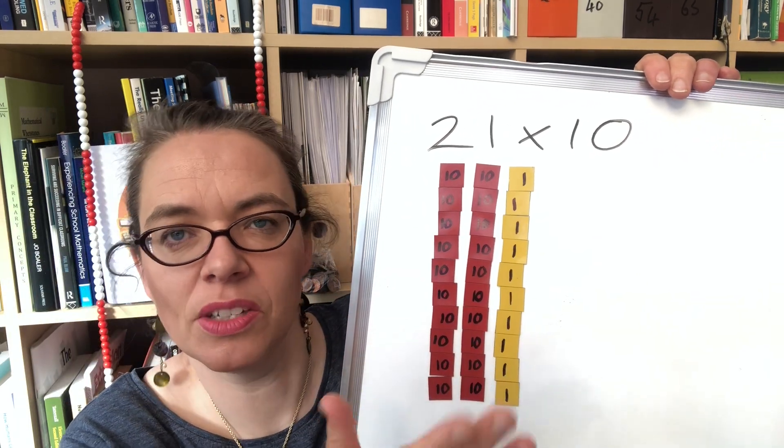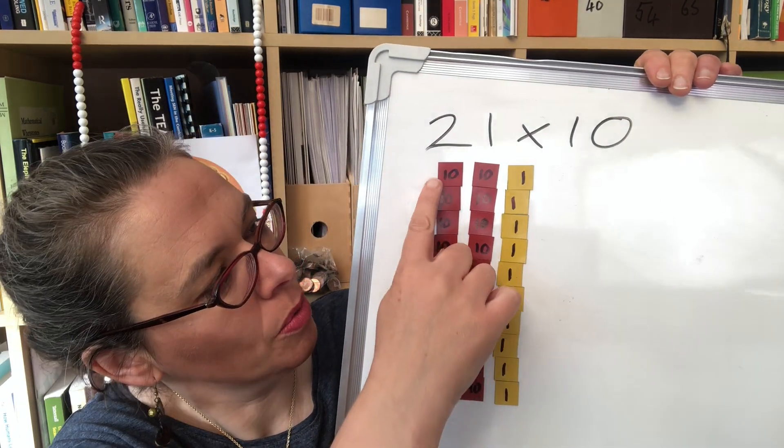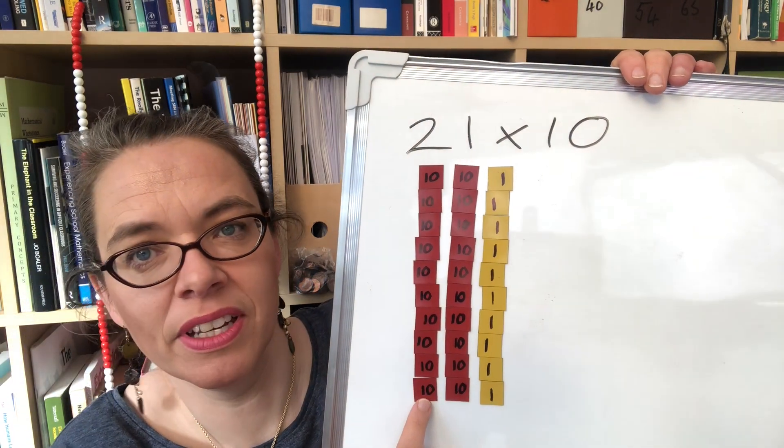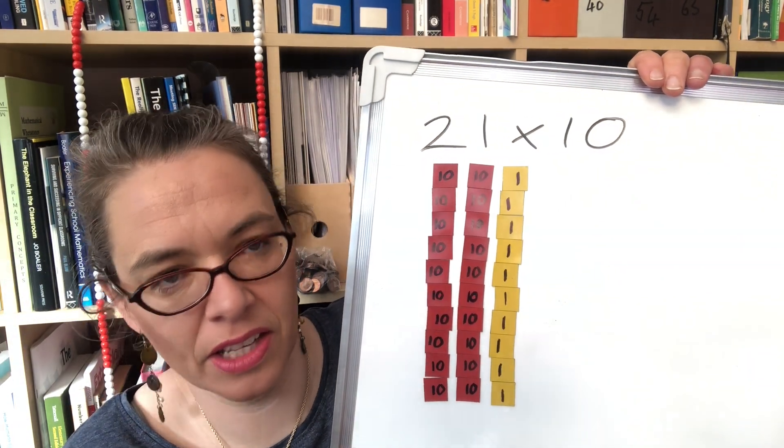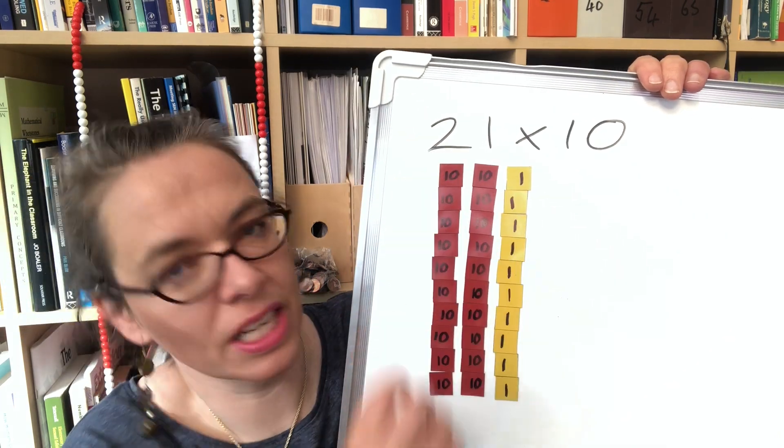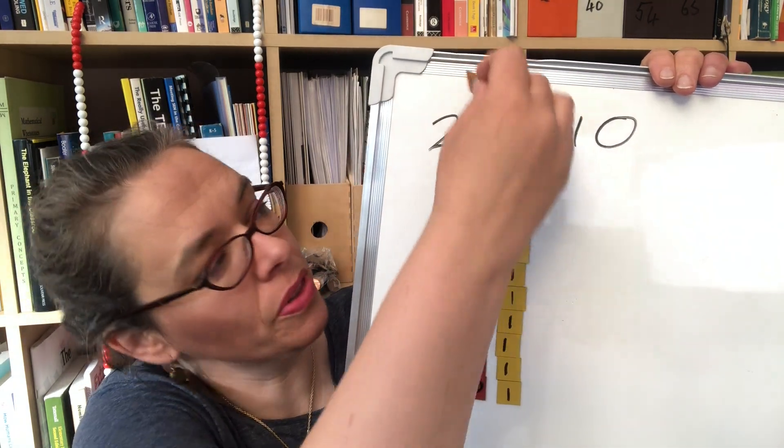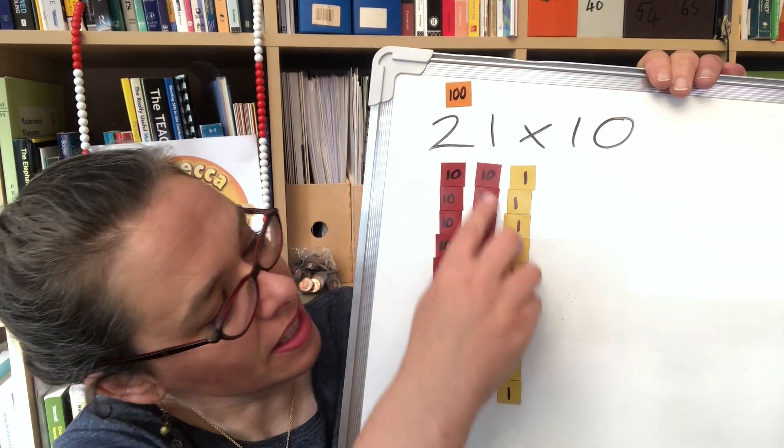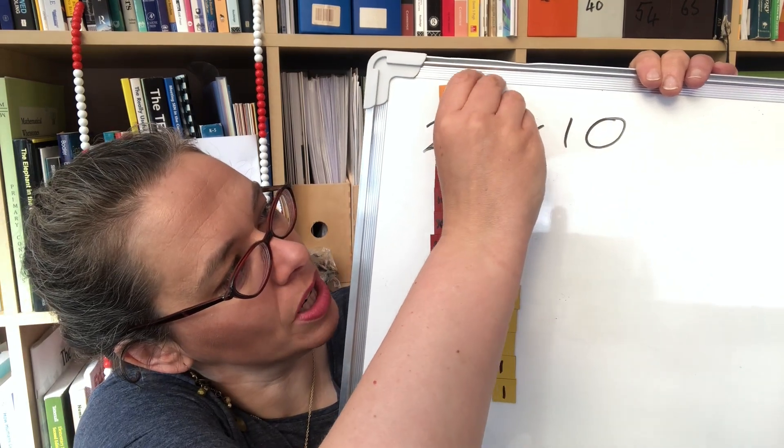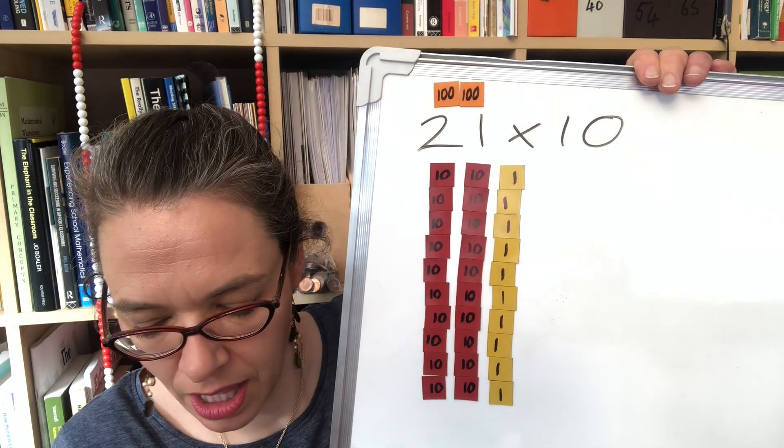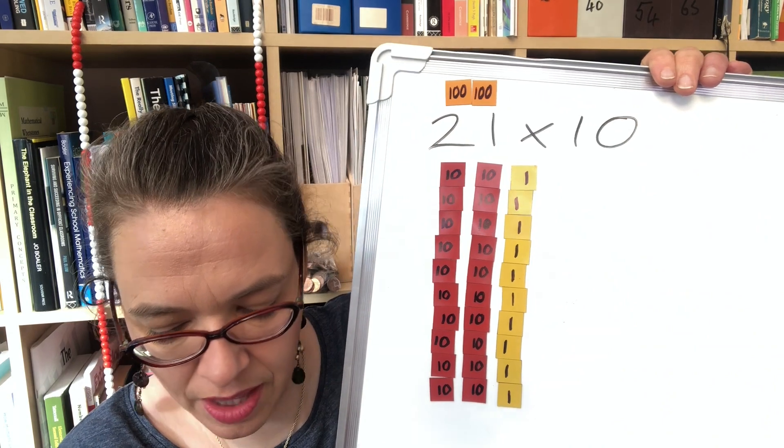When we start to establish this structure we begin to see that here we have 10 tens so they're going to exchange into one 100 in our answer. I'll just put that here for now and these 10 tens will also become 100 and the 10 ones they will become a 10.